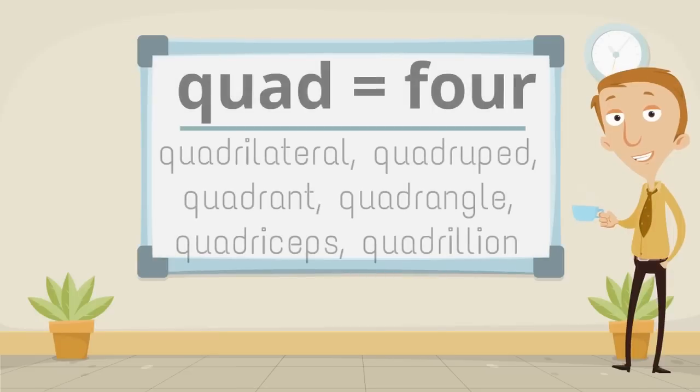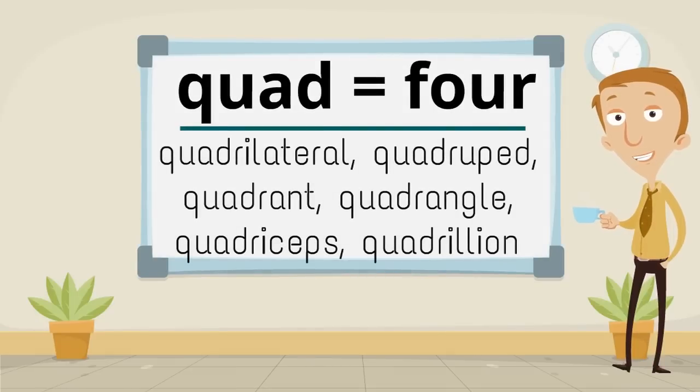Quad, meaning four, makes the words quadrilateral, quadruped, quadrant, quadrangle, quadriceps, and quadrillion.